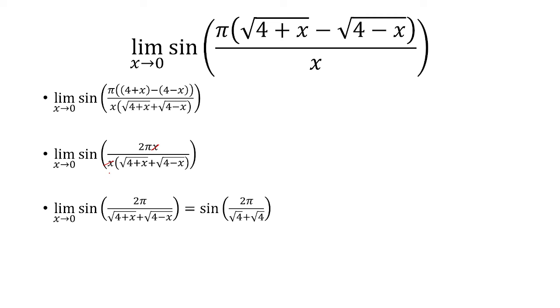And now we can plug in x equals 0 to get 2 pi over square root of 4 plus square root of 4. Each of these guys is 2, so we have 2 pi over 4 inside the sine.